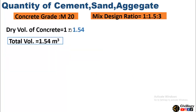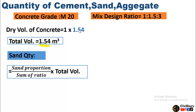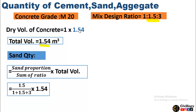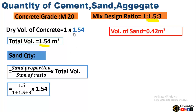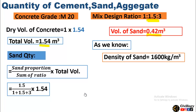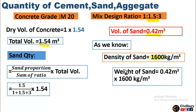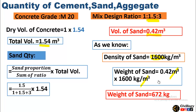Now, coming towards the calculation of sand for this design. The total volume is 1.54 and by using the similar formula — sand proportion divided by sum of ratio — where sand proportion is 1.5 in this mix design. By simplifying, we will get the volume of sand as 0.42 cubic meters. The density of sand is 1600 kg per cubic meter, and multiplying this volume with the density, we get the weight of sand which is 672 kg.